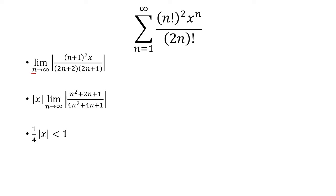Clearly the limit is going to be one fourth, and we want this to be less than 1. So the absolute value of x is less than 4. That means the radius of convergence is 4.